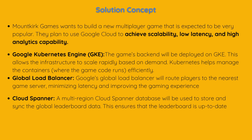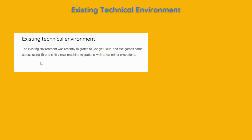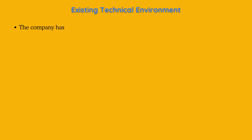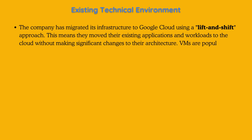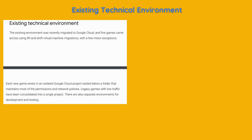I would like to read the existing technical details before starting to create a design for this case study. The existing environment was recently migrated to Google Cloud, and five games were moved using lift-and-shift virtual machine migrations, with a few minor exceptions. This means they moved their existing applications and workloads to the cloud without making significant changes to their architecture. Each Google Cloud project maintains its own IAM policies to control access and permissions.